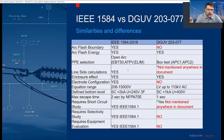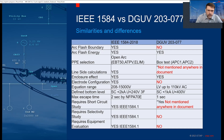Do we calculate line side? In IEEE 1584 it's very clearly stated we should. In DGUV it's not mentioned but technically possible. Enclosure effect: yes, both have it. We don't have electrode configurations in DGUV. Equation range: IEEE covers 208V to 15kV; DGUV states low voltage up to 110kV — though that upper range is something to discuss, since there are no background calculations given to prove it.